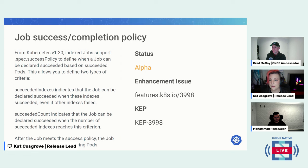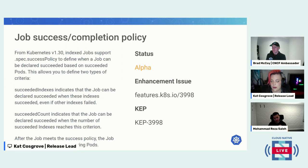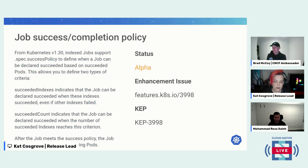The job success and completion policy: from Kubernetes 1.30, indexed jobs support a spec successPolicy to define when a job can be declared succeeded based on succeeded pods. You can define two types of criteria: succeededIndexes indicates that the job can be declared succeeded when those specific indexes succeed even if others failed, and succeededCount indicates the job can be declared succeeded when the number of succeeded indexes reaches that count. After the job meets the success policy, the job controller terminates any lingering pods.